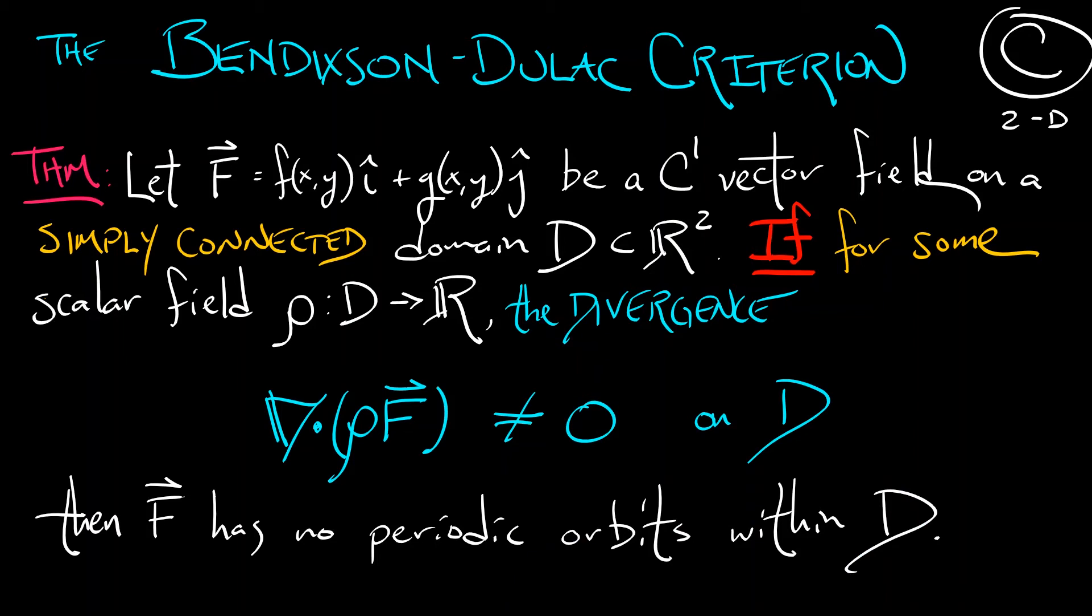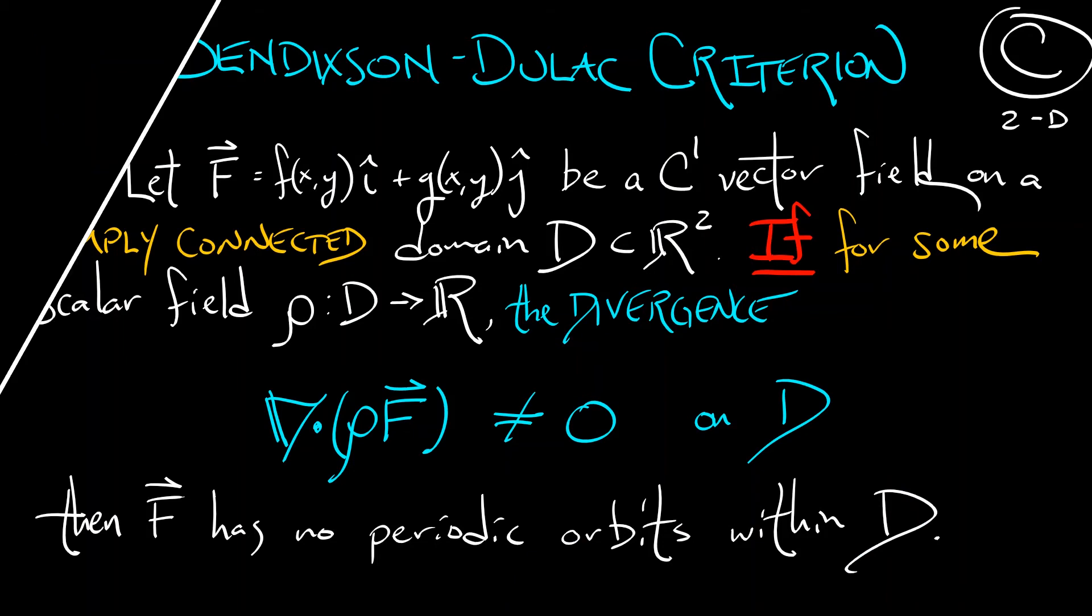The first time through, it's probably a good idea to ignore that rho. Assume that it's equal to 1. See if it makes sense in that case. Now, is this weird? No, it's not.